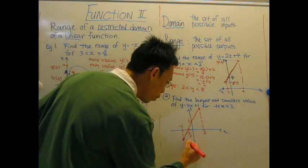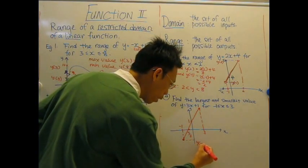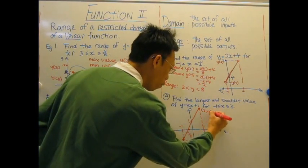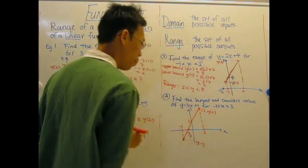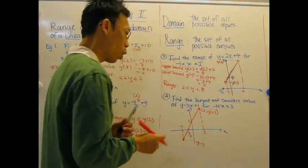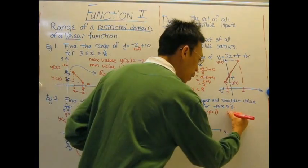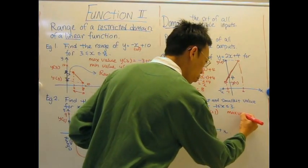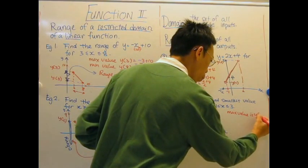So what's this value here? This is y of negative 1. And here is 3 and y of 3. Y of 3 is not that. So obviously, in this case, it's easy to see the maximum value. In this case, it's y of 3.